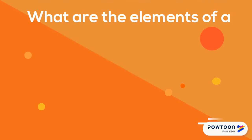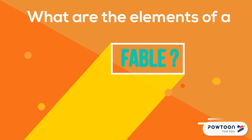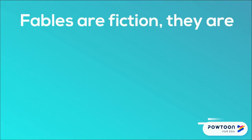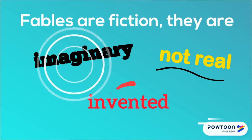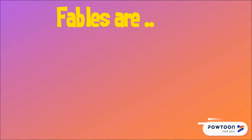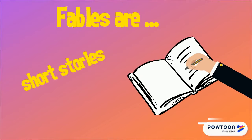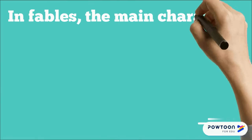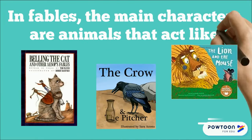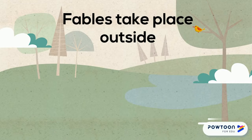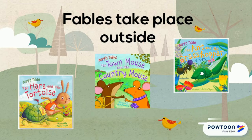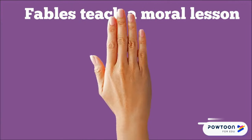What are the elements of a fable? Fables are fiction — they are imaginary, not real, invented. Fables are short stories. In fables, the main characters are animals that act like humans. Fables take place outside. Fables teach a moral lesson.